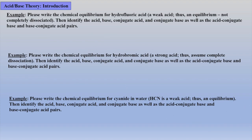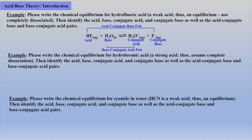In the next few examples, we are charged with writing equilibriums and identifying the acid, base, conjugate acid, and conjugate base, as well as the acid-conjugate base and base-conjugate acid pairs. First, write out all reactants and products. Second, identify the acid, base, conjugate acid, and conjugate base. And finally, label the acid-conjugate base and base-conjugate acid pairs.